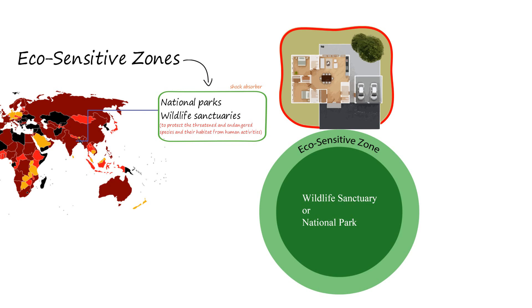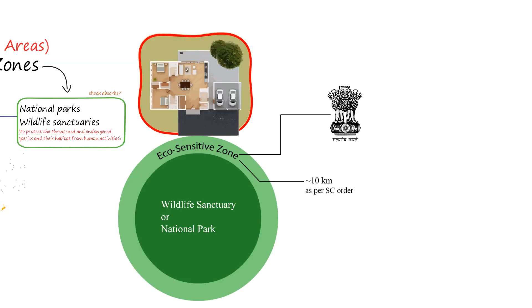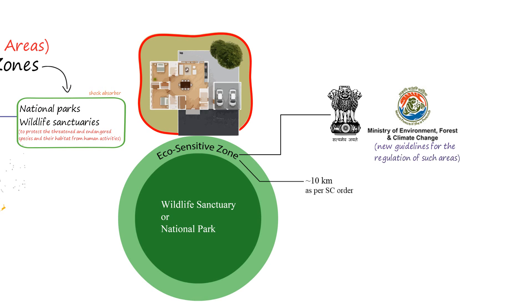This is what is called an eco-sensitive zone or ecologically fragile area. The area limit of these eco-sensitive zones as per the Supreme Court order is up to 10 km. These eco-sensitive zones are regulated by the central government through the Ministry of Environment, Forests and Climate Change, who come out with new guidelines for the regulation of such areas. The government not only can increase the area beyond 10 km width, but it can also reduce it for mining and other commercial development purposes.